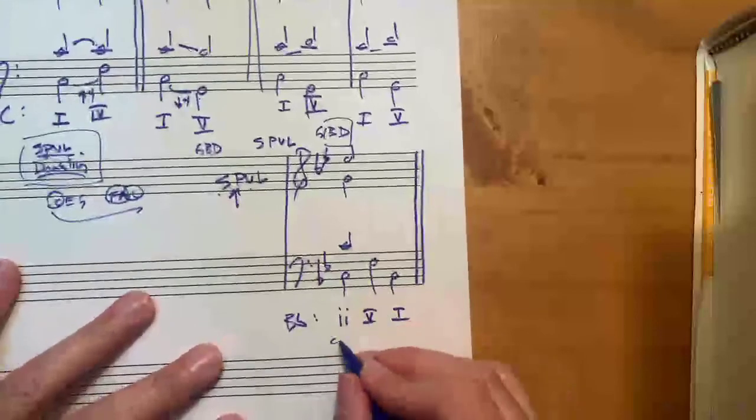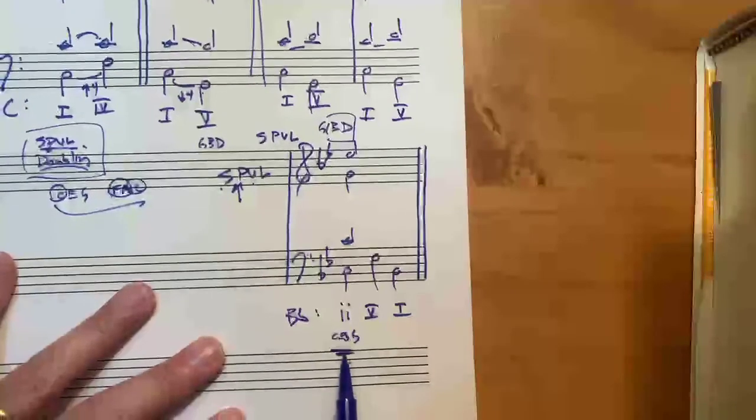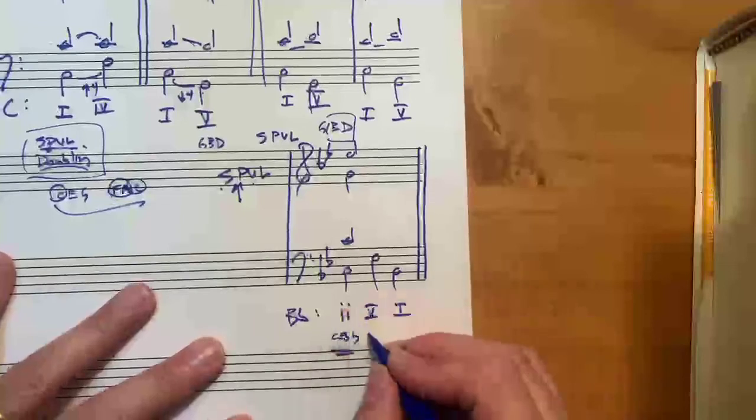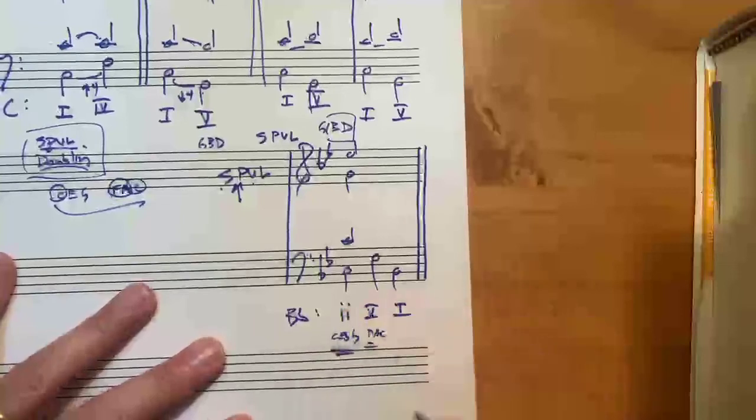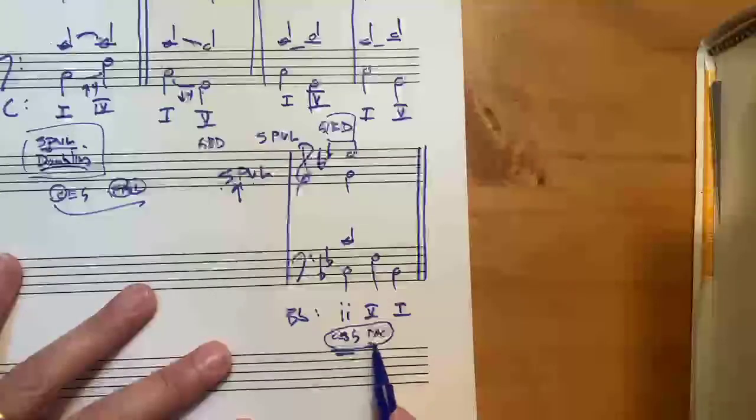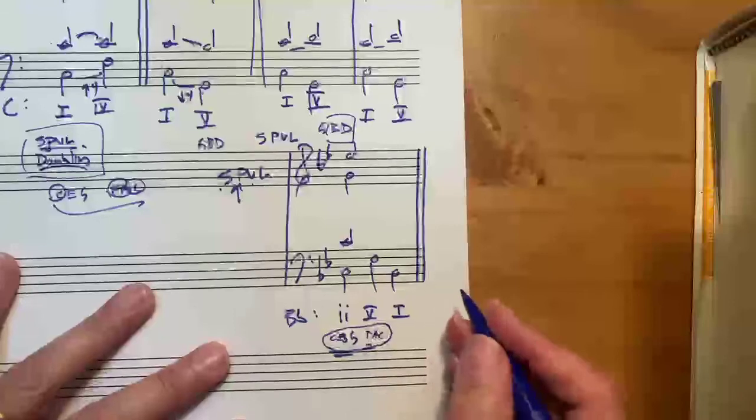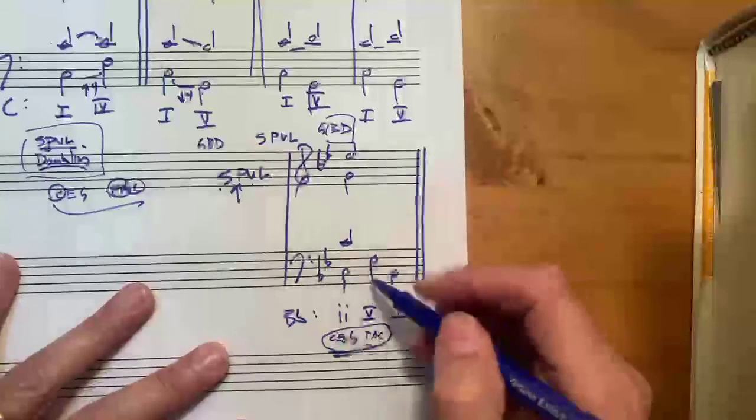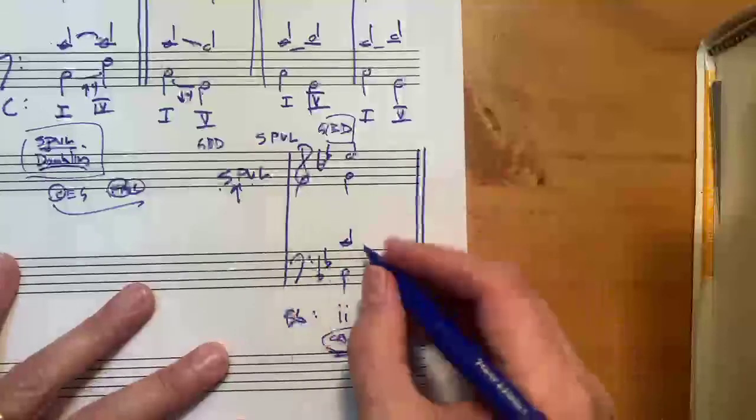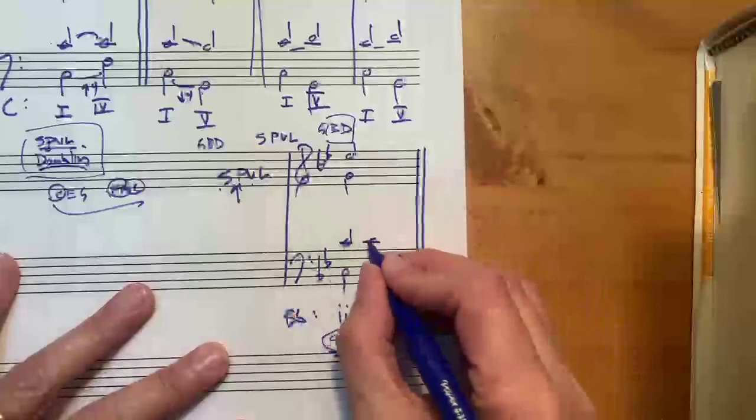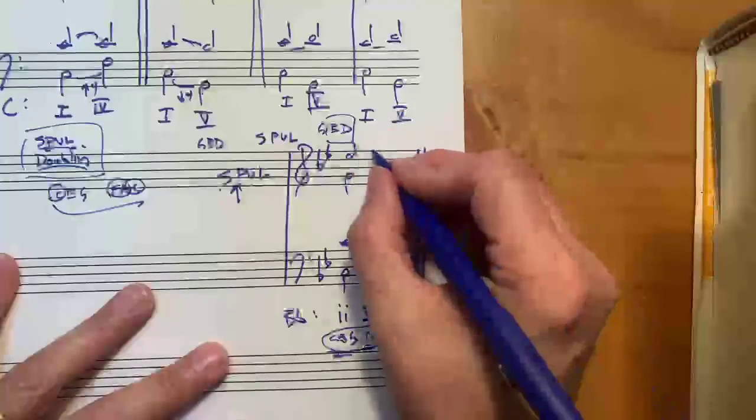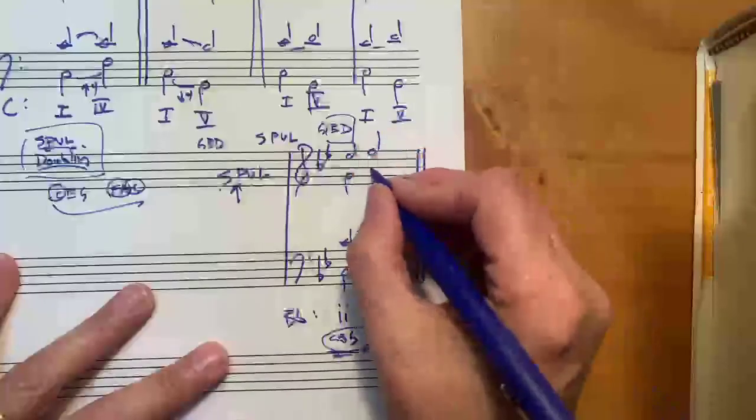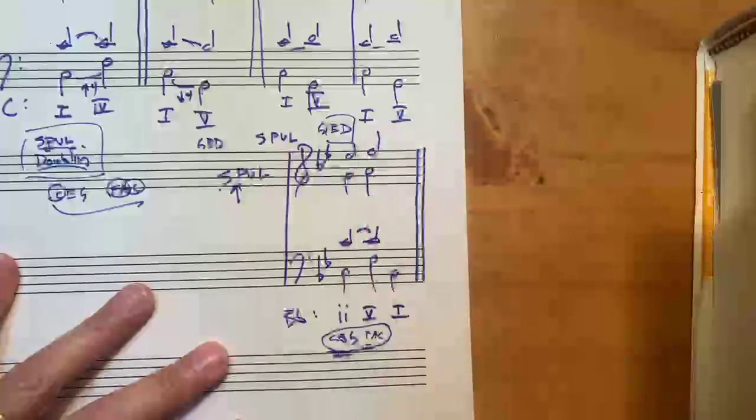So here we've got C, E flat, G. And don't do this. I'm just doing this to show you. Here we have F, A, C. This is a visual representation of what should be happening in your head. So now we need F, A, C. We're going to do smoothest possible voice leading. So we have a common tone. We have an F, and we have an A. So right now we have a common tone and two voices moving by step.